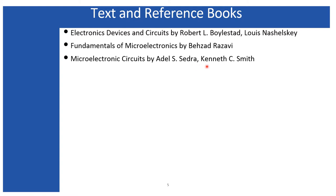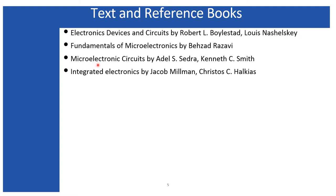The third book is by Sedra and Smith — a very good book that covers almost everything in analog electronic circuits, though I don't advise students to read it first. You can use it as it covers everything in detail. The fourth book, Integrated Electronics by Millman and Halkias, should be considered a reference book. Don't start your study from this book; first build basic concepts from any of the previous three books.